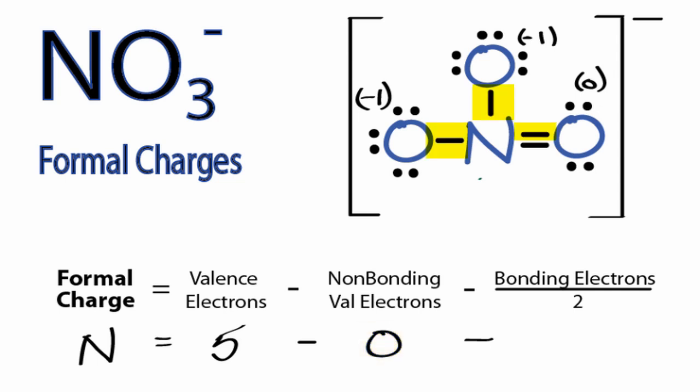And then we have 2, 4, 6, 8. So we have 8 valence electrons divided by 2. So nitrogen has a formal charge of plus 1.